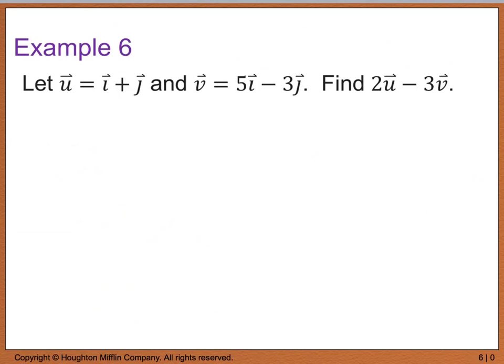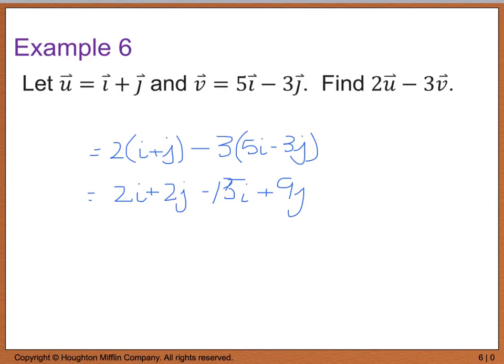So what this does is this is going to give me 2 times (i + j) minus 3 times (5i - 3j) which is going to give us 2i + 2j minus 15i plus 9j. And then we're going to have to combine our like terms. So 2i minus 15i is -13i and 2j plus 9j equals 11j. So this right here then would be your final answer.